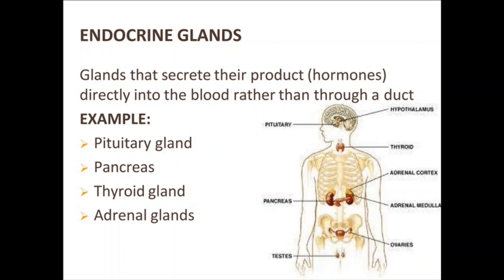This other gland is the endocrine gland. Endocrine glands are glands that secrete their products directly into the blood rather than through a duct.